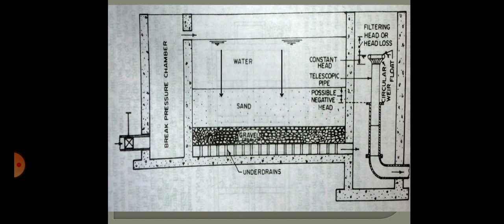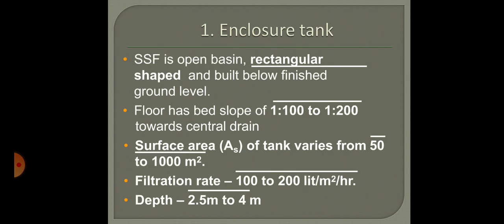A typical slow sand filter is an open basin, rectangular in shape, normally built below ground level. The watertight basin is constructed in masonry — either stone masonry or brick masonry. The floor of the tank has a bed slope of 1:100 to 1:200 towards the center, sloping from both sides. The surface area of the tank varies from 50 to 1000 square meters, the filtration rate is around 100 to 200 liters per square meter per hour, and the depth of the tank is normally between 2.5 to 4 meters.